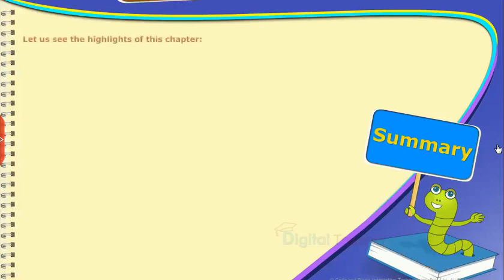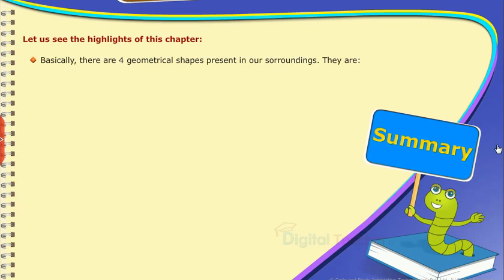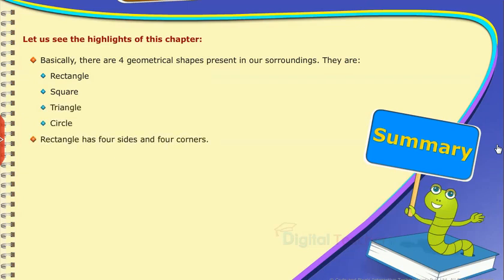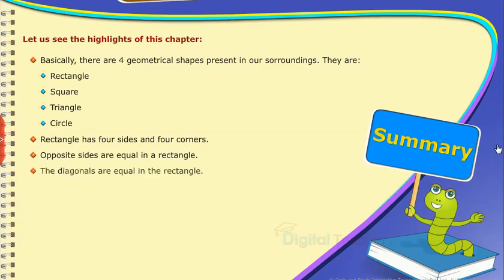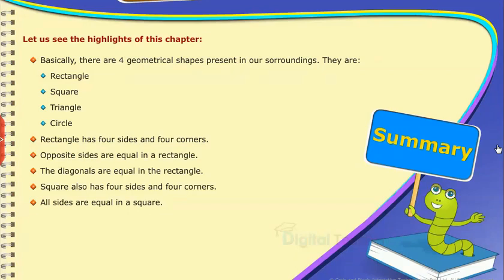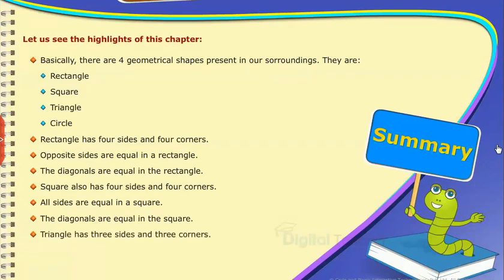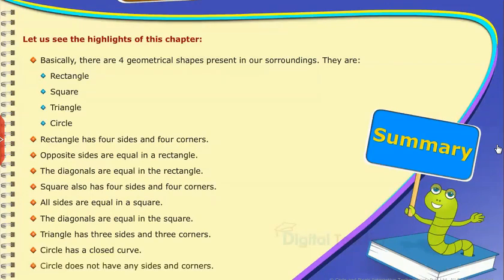Summary: Let us see the highlights of this chapter. Basically there are four geometrical shapes present in our surroundings: Rectangle, Square, Triangle, and Circle. Rectangle has 4 sides and 4 corners; opposite sides are equal and the diagonals are equal. Square also has 4 sides and 4 corners; all sides are equal and the diagonals are equal. Triangle has 3 sides and 3 corners. Circle has a closed curve and does not have any sides and corners.